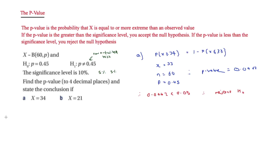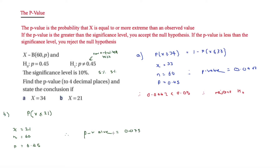Now for part b, x = 21. The probability of X ≤ 21 is computed using x = 21, n = 60, p = 0.45 — remember we use binomial CD rather than binomial PD. The p-value equals 0.0758. Since 0.0758 is greater than 0.05, which is our significance level, the p-value is greater than the significance level, so we accept H0.